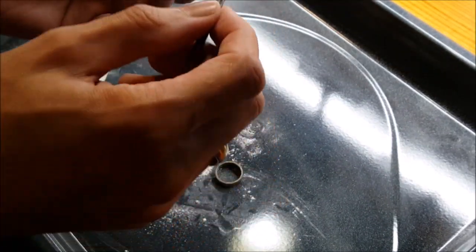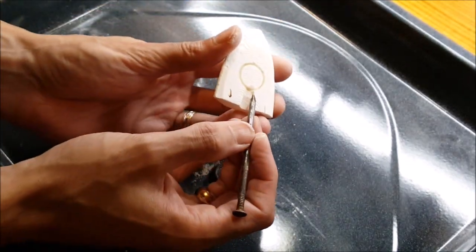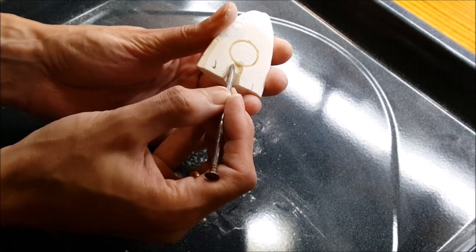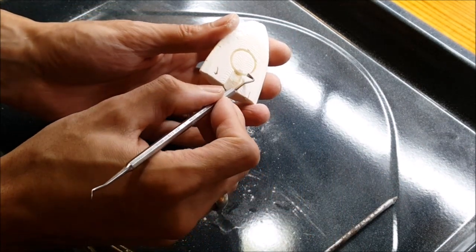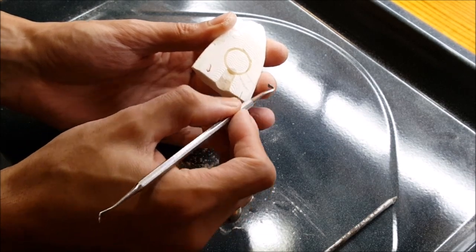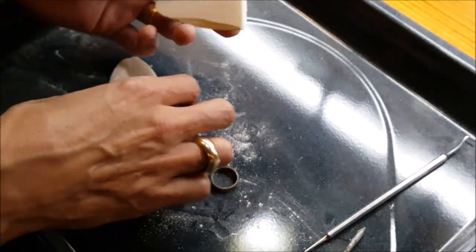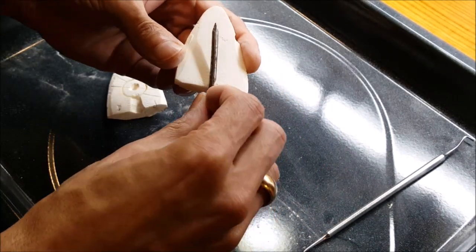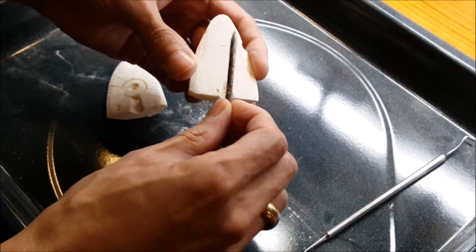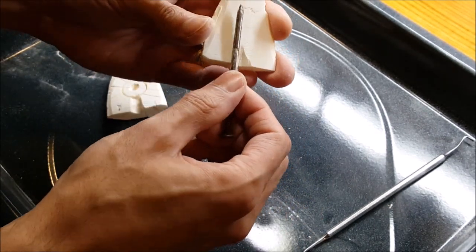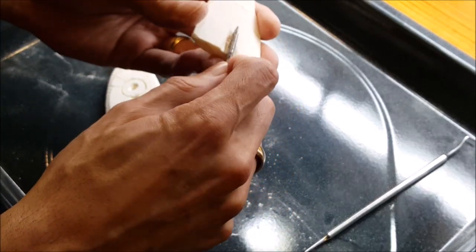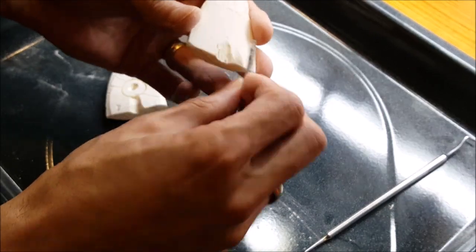A good rule of thumb for the sprue is at least one-third of the thickness of whatever you're casting. And in this case, we're going to want plenty of venting. I like to put a little bit of a sprue on the other side too, just so there's more metal in there, because this is a gravity casting. All you have to shove the metal down into the mold is basically the weight of the metal itself. So the more weight there is, the better chances the metal will flow in there.